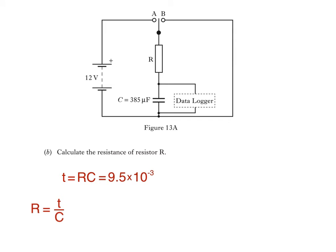Which equals 9.5 times 10 to the minus 3 divided by 385 times 10 to the minus 6. That's the value of the capacitance shown in the circuit diagram. So R works out to be 25 ohms.